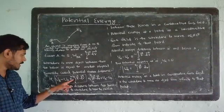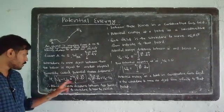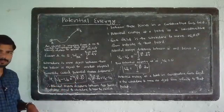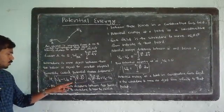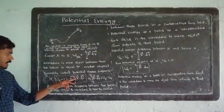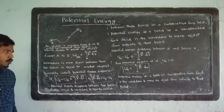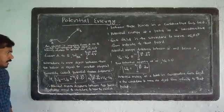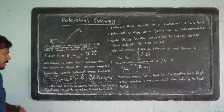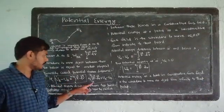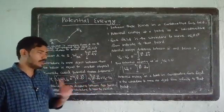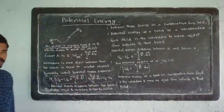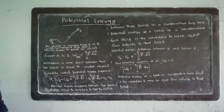UB minus UA is equal to minus integral A to B of F dot dR. Therefore, integral A to B of F dot dR is equal to UA minus UB.